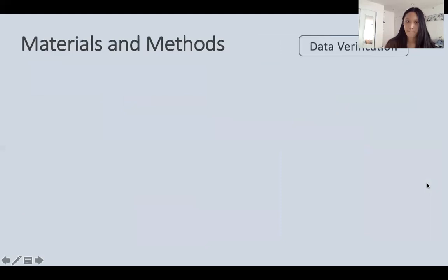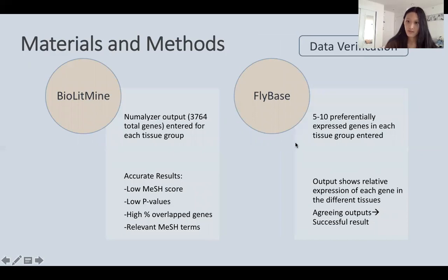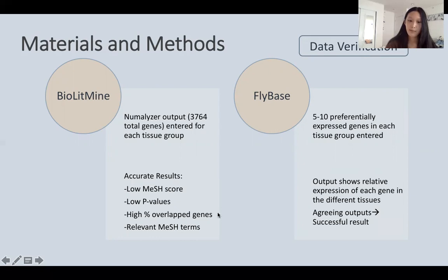The data was verified by cross-referencing with two platforms. The first is BioLitMine, a literature mining service from the FlyRNAi database that allows the user to mine through thousands of PubMed publications based on medical subject heading terms — such as anatomy or astronomy. Approximately 3,500 total output genes were entered for each tissue group, and an accurate result was denoted by a low mesh score, low p-values, and a high percentage of overlap genes. The top five mesh terms output by BioLitMine were considered when analyzing correlation.